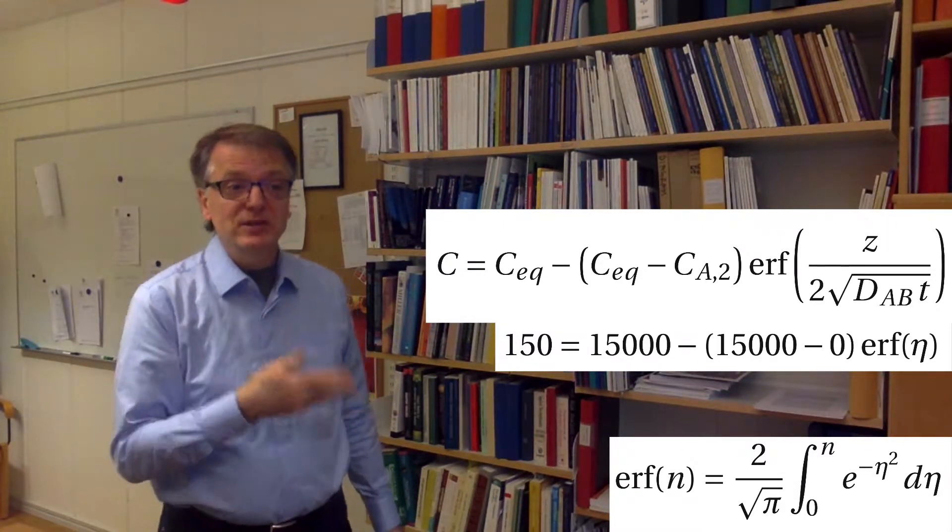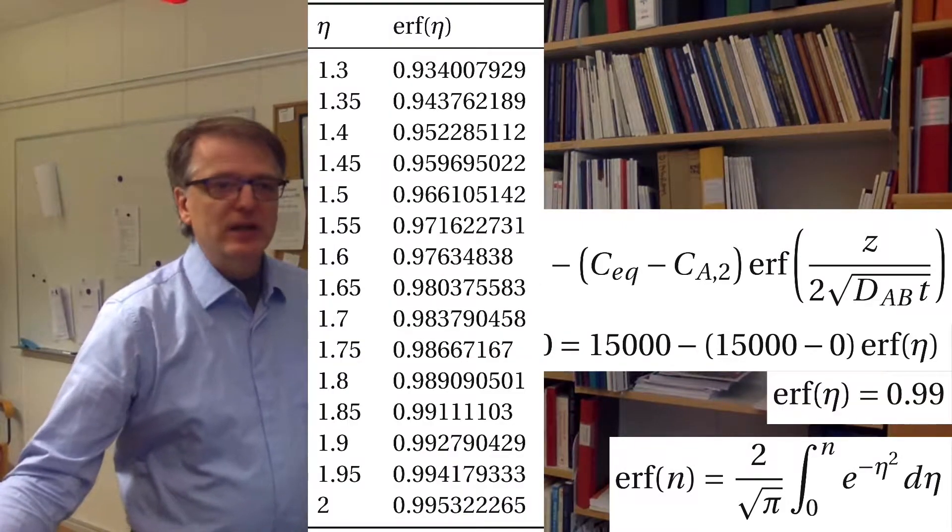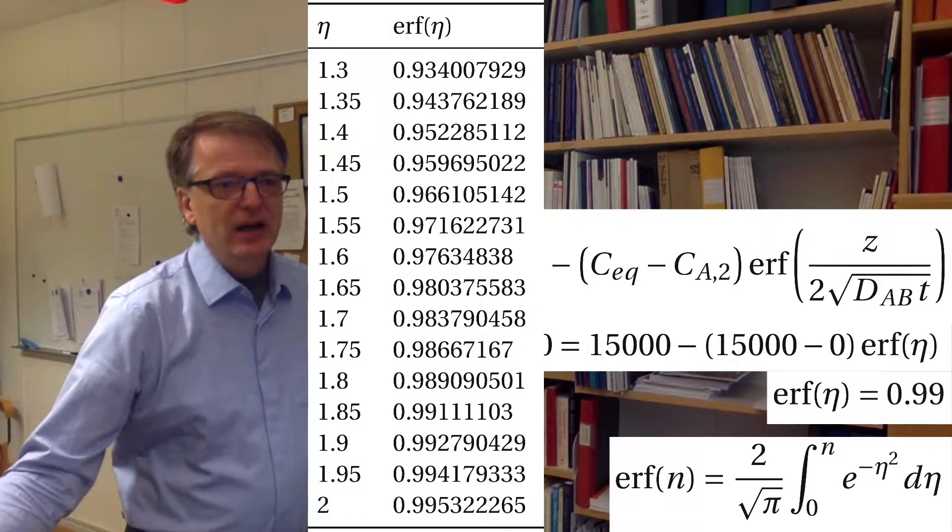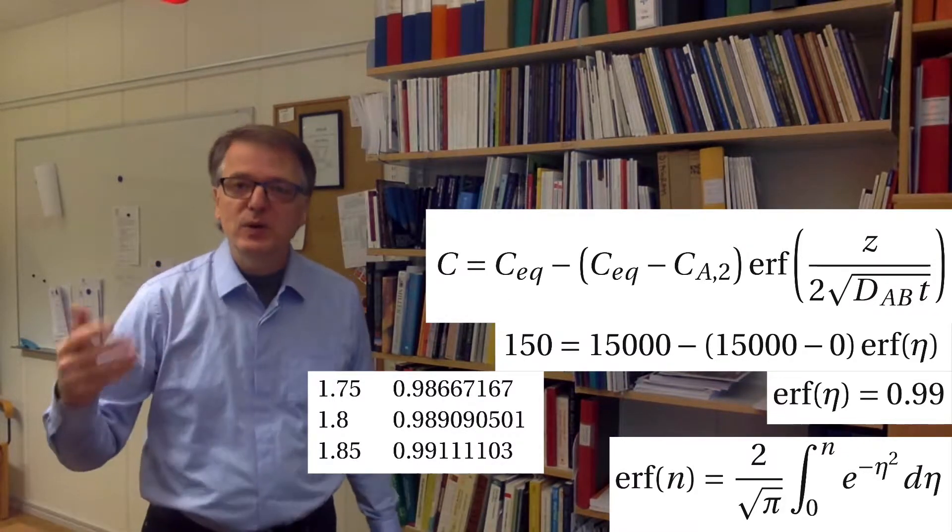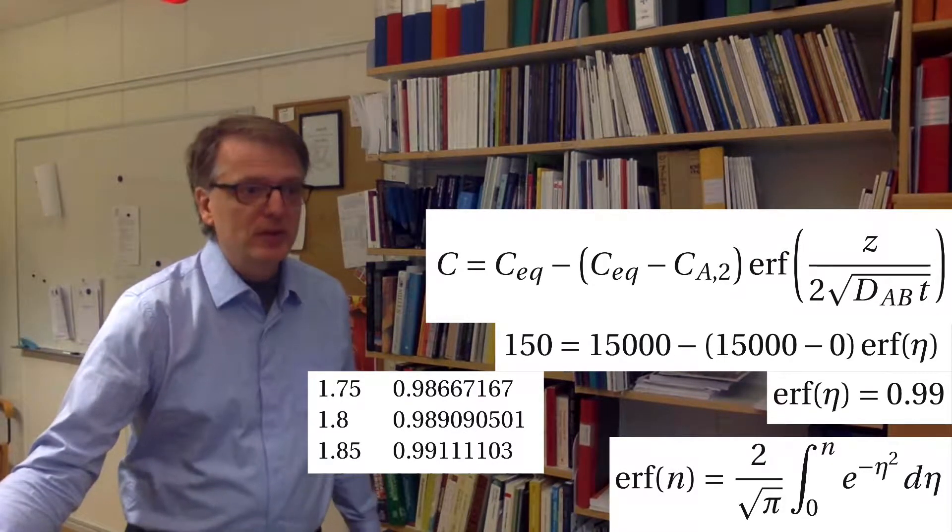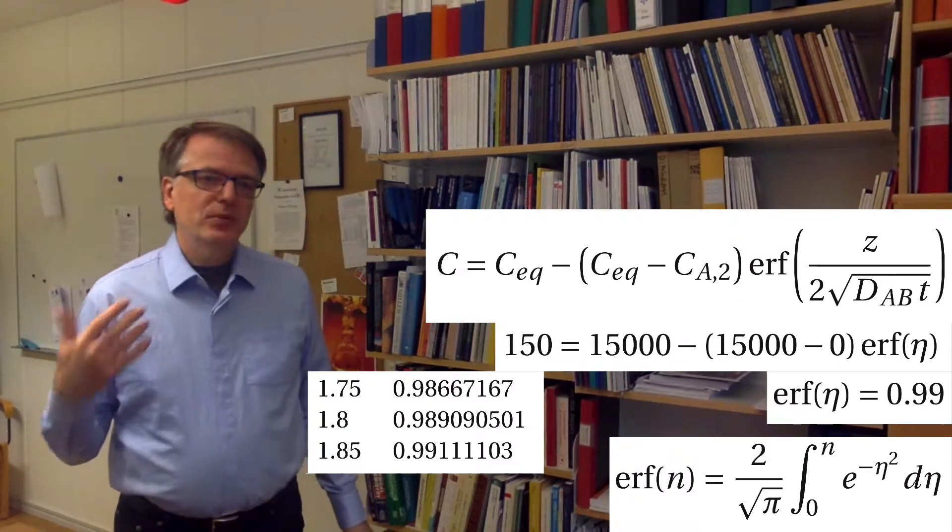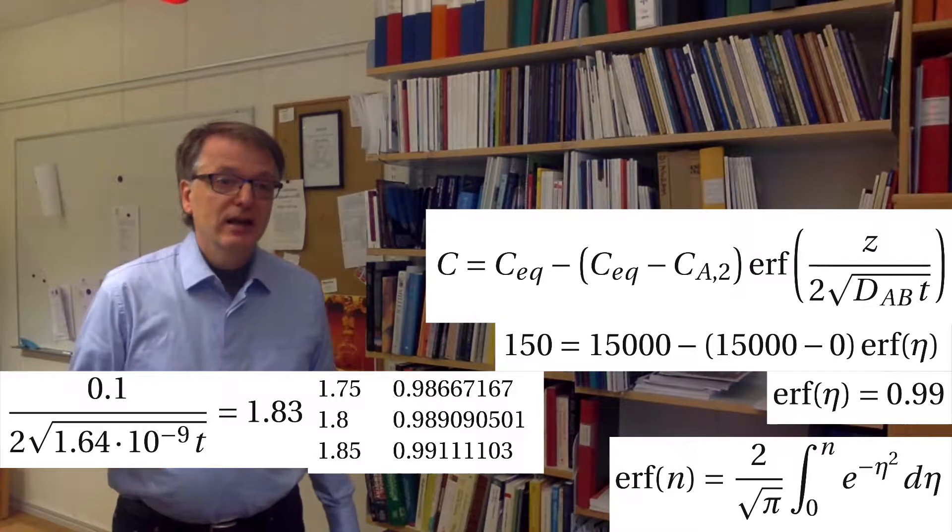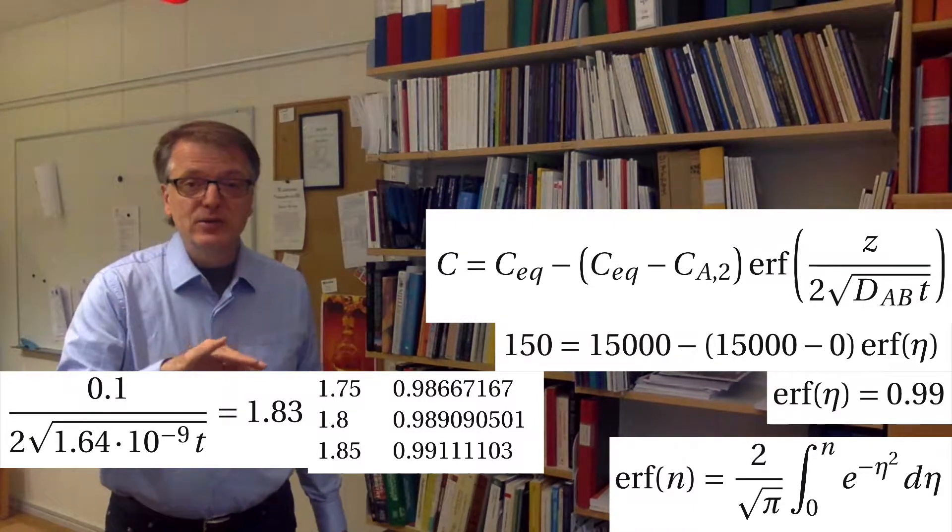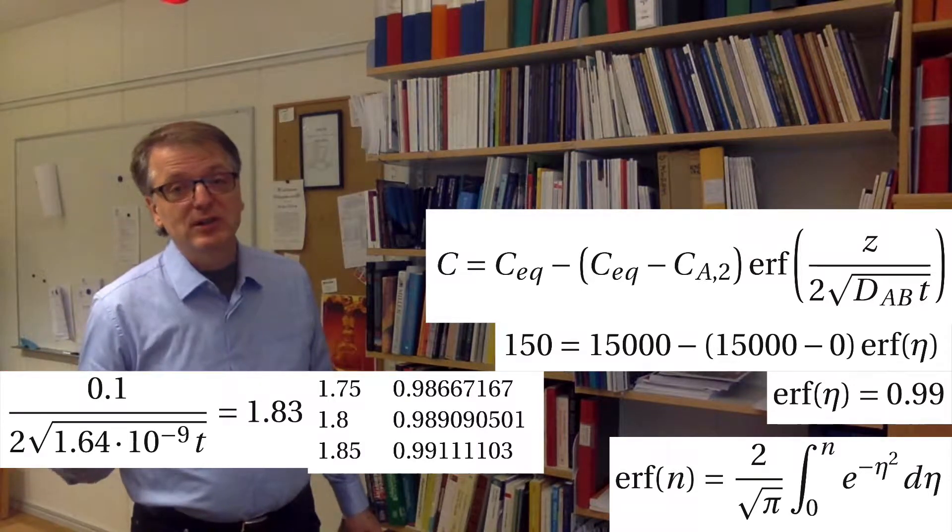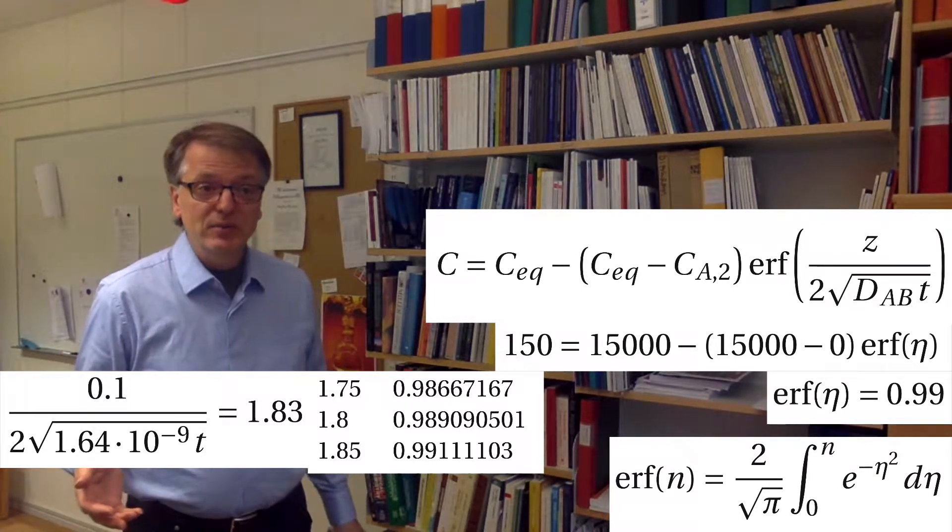Well, it should become 0.99 if you shuffle this around. So then we look into our table and see what 0.99. We don't actually have 0.99 here, but we can try to interpolate between the two. So we get approximately an eta of 1.83 and eta is this z divided by 2 times the square root of diffusivity times the time. So we put in all our numbers.